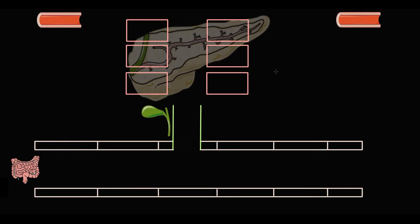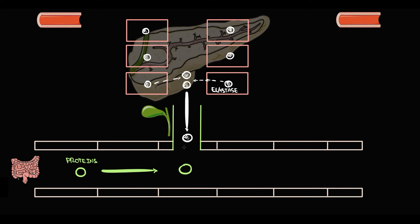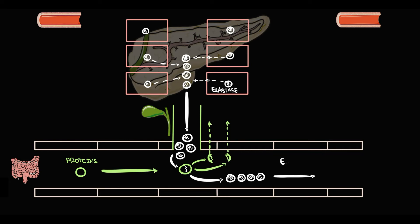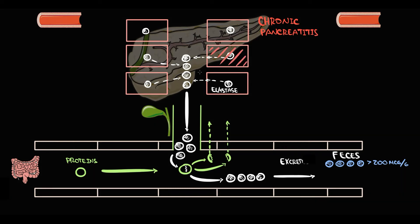Another enzyme we determine is fecal pancreatic elastase. Elastase is an enzyme produced and stored in acinar cells of the pancreatic tissue. When proteins enter the duodenum, acinar cells secrete elastase into the duodenum, where it provides digestion of small proteins. After digestion, elastase is excreted in the feces. The normal level of elastase in the stool is more than 200 micrograms per gram.